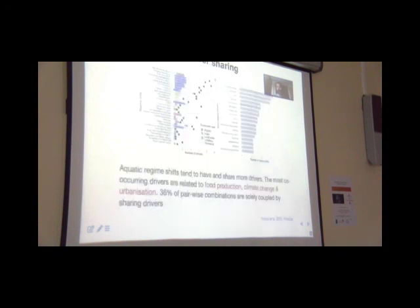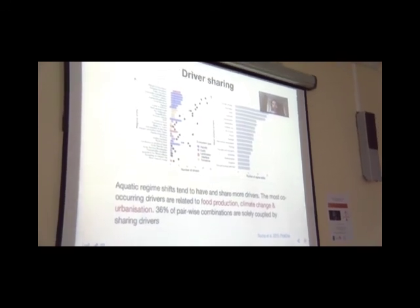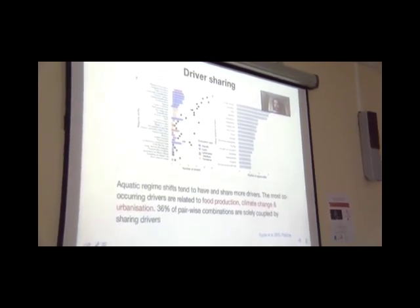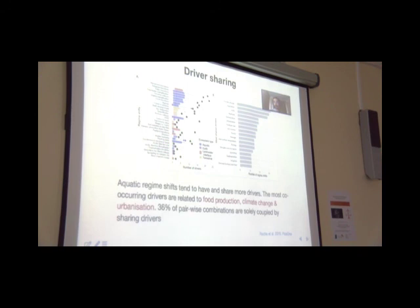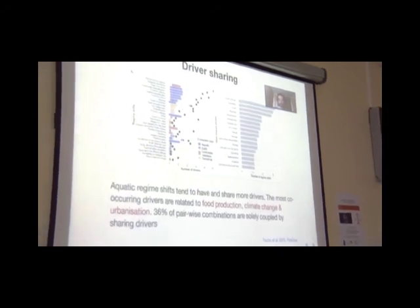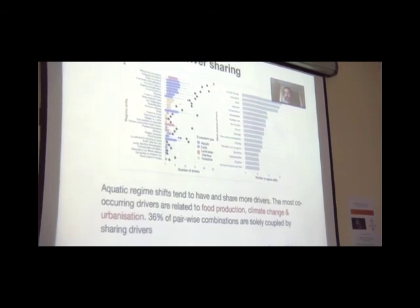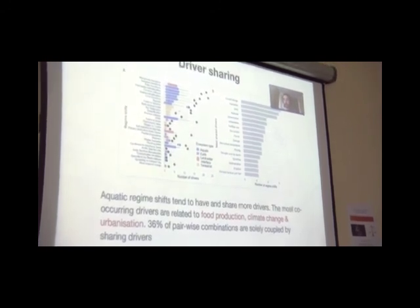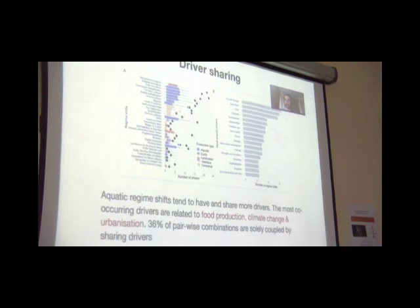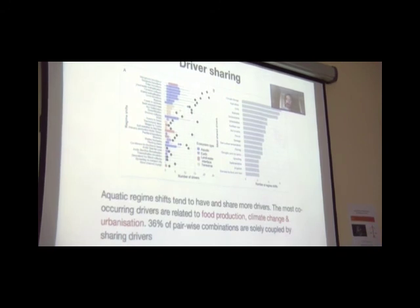If we dig a little bit farther on the shared drivers, we found the following. Here the black dots are the number of drivers reported on the database. The boxes represent the distribution of shared drivers. We see in blue here the aquatic regime shifts tend to share more drivers. On the right, you see the drivers that are most shared by the regime shifts. You see climate change, greenhouse gases, agricultural activities are shared by more than half of the regime shifts in our sample.